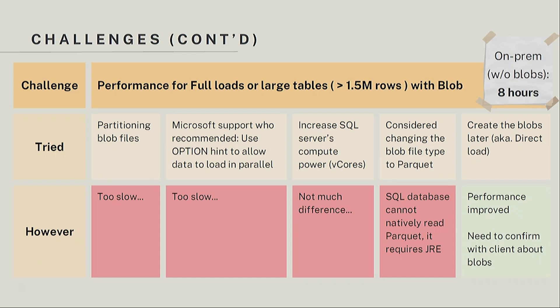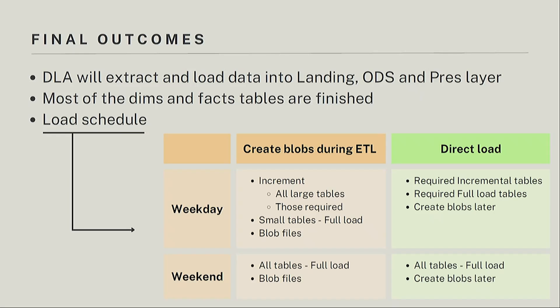As final outcomes, the DLA will be used for orchestrating all the data flows in the MDP. Most of the dimension and fact tables have been created, and here is the load schedule we are going to use. If the client still wants blobs created during the ETL process, then large tables of more than 1.5 million rows — which we found to be our benchmark — will need to be loaded incrementally to maintain performance. However, our most preferred solution is to do a direct load, as it is the fastest and aligns with the original load plan.